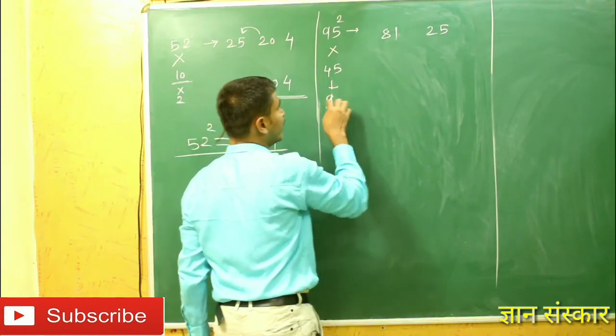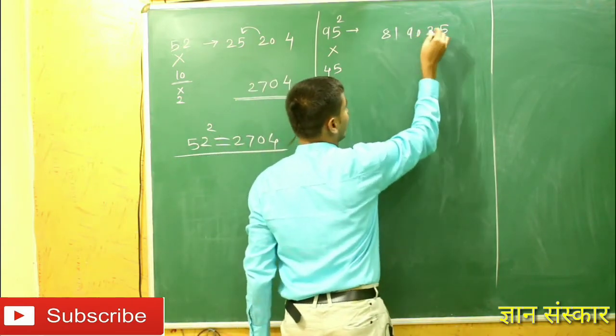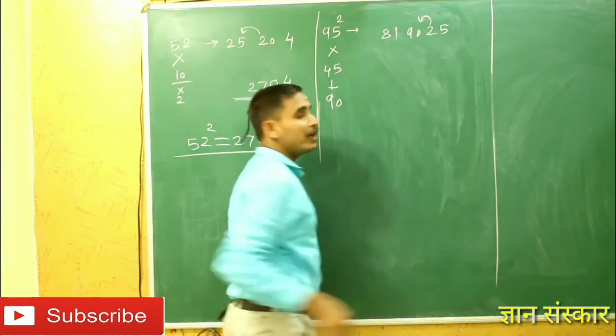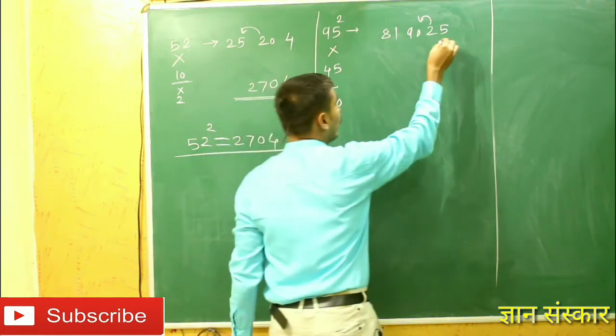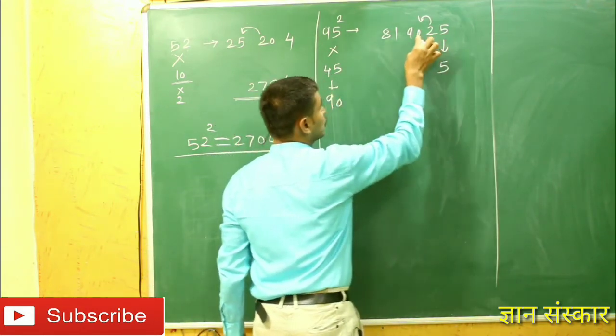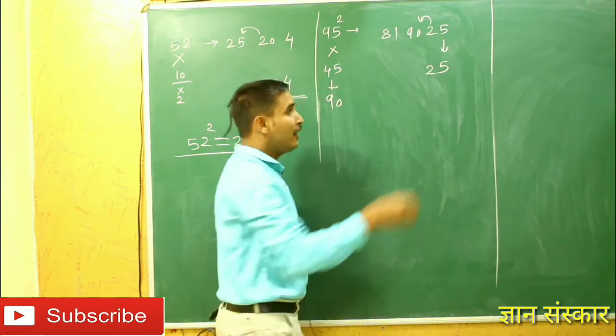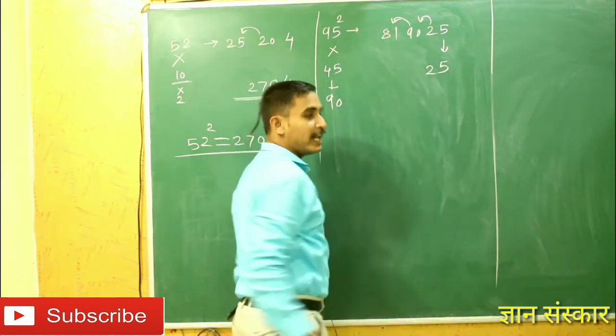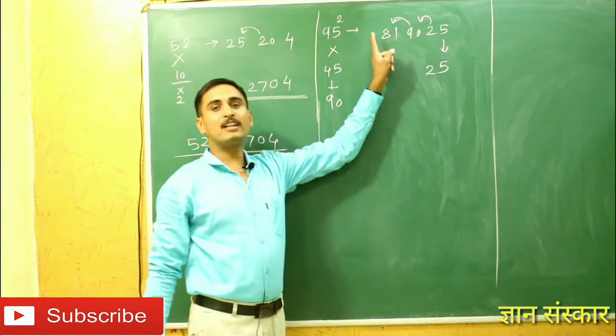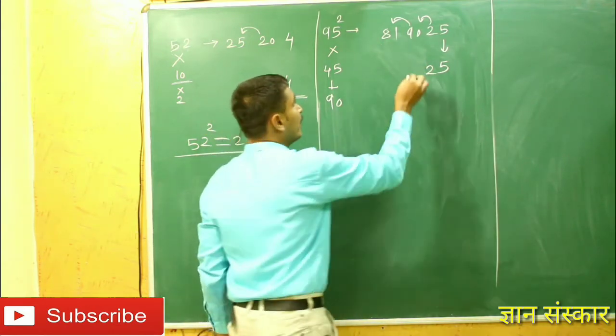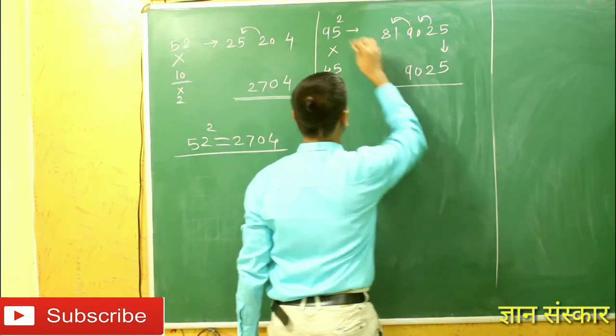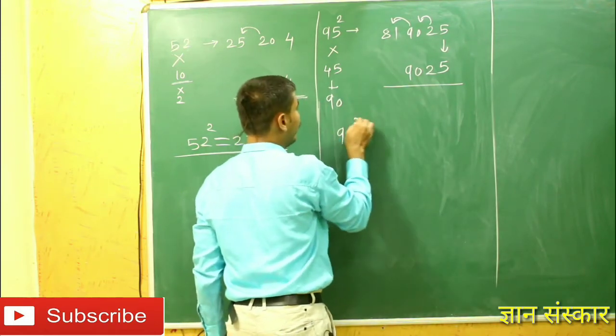Then these 2 will go in carry over, so we will write 5 here. 90 plus 2, that is 92. 2 should be written here. 9 again goes in carry over. So 9 plus 81, it will become 90. And this is the square of 95: 95 squared is equal to 9025.